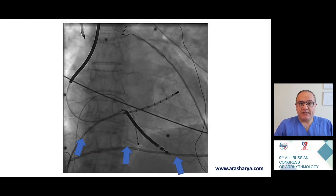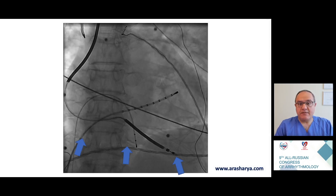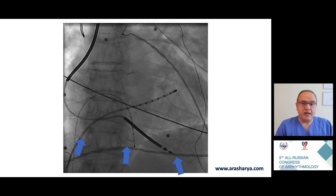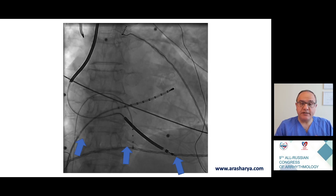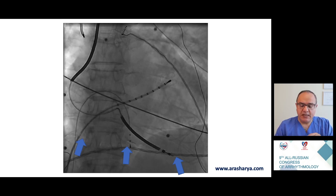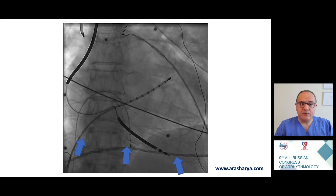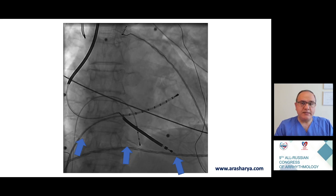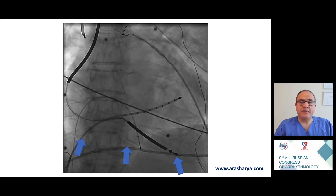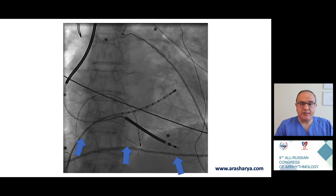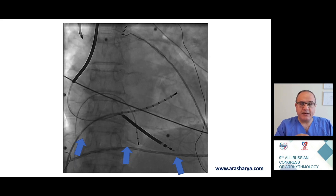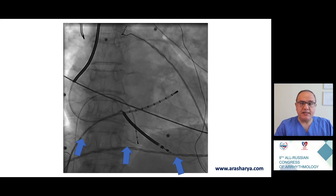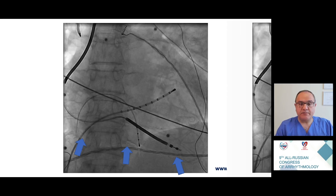The first step for epicardial access is to have a normal fluoroscopy image. This is a very good guide because we can see a white line indicating the epicardial space, which provides guidance to know exactly where the epicardial space is during epicardial puncture.